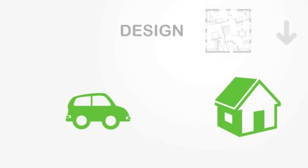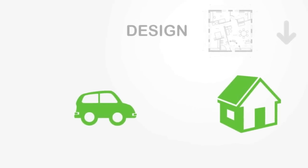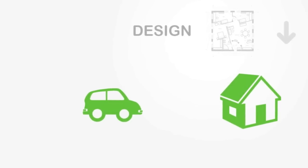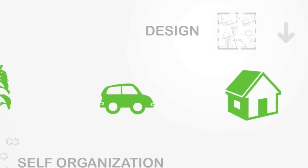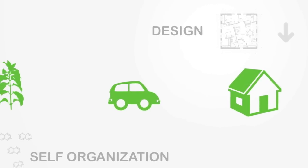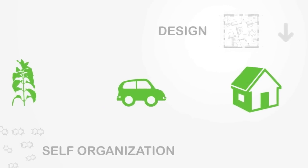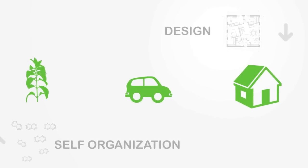If a system such as a plant, a building, or a car shows organization, we tend to assume that someone or something must have designed it in that particular order. Self-organization is the idea that this type of global coordination can instead be the product of local interactions.